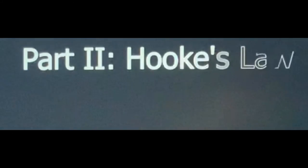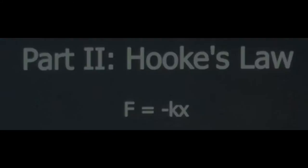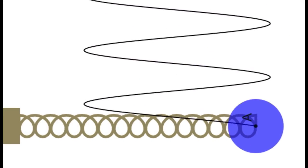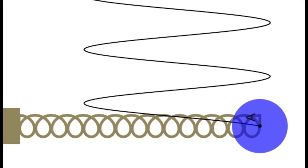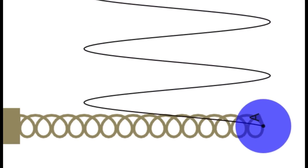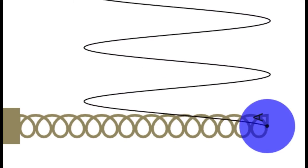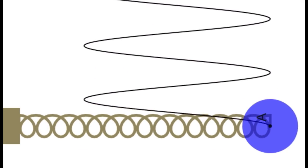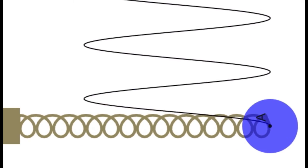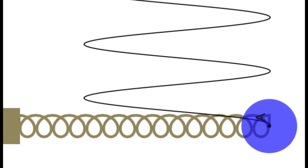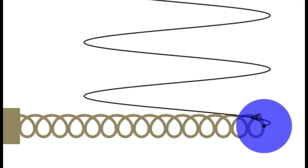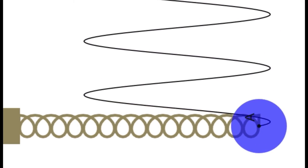Part 2: Hooke's Law. We have already learned that when you release a spring, it goes into sinusoidal motion. But there are many factors that will influence the amplitude of the cosine wave made by the spring. One of these is the spring constant. The spring constant depends on the material that the spring is made of and how stiff the spring is. Basically, it is just a property of the spring.